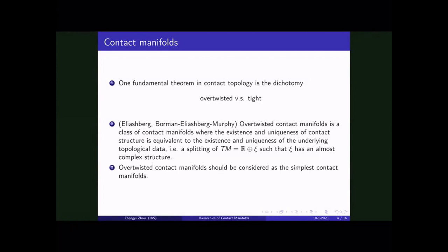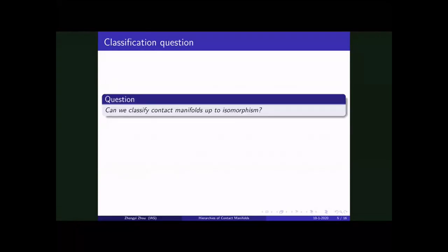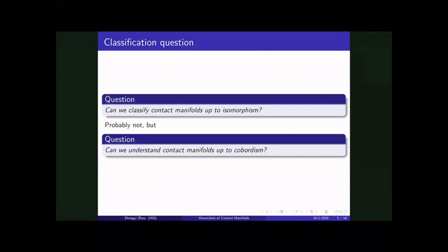And overtwisted contact manifold should be understood as the simplest contact manifold. Okay. So the question, natural question we can ask is, can we classify contact manifolds up to isomorphism? If you classify overtwisted contact manifolds, then the theorem by Eliashberg and Borman, Eliashberg, Murphy basically tells you it's a purely topological problem. But what about the more complicated tight contact structure? The answer is probably not. It's probably very hard to do this. So maybe we can ask a weaker question, which is, can we understand the contact manifolds up to cobordism? Just like we have succeeded in the classical differential topology.